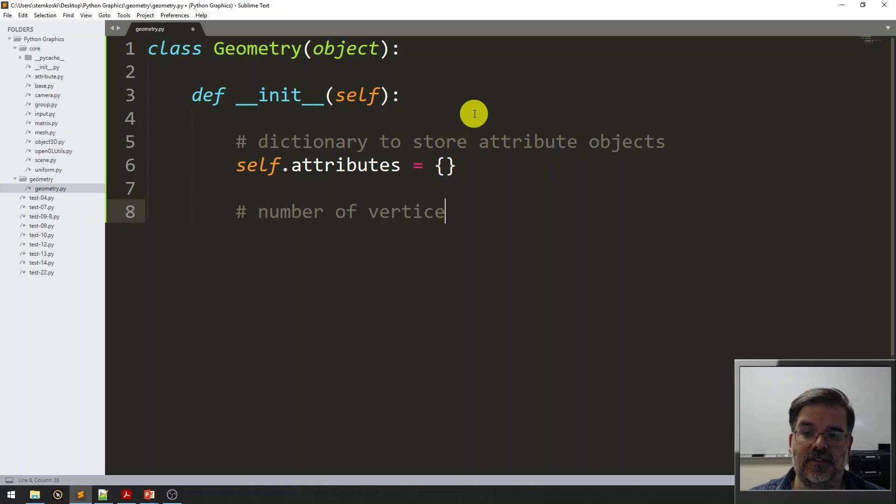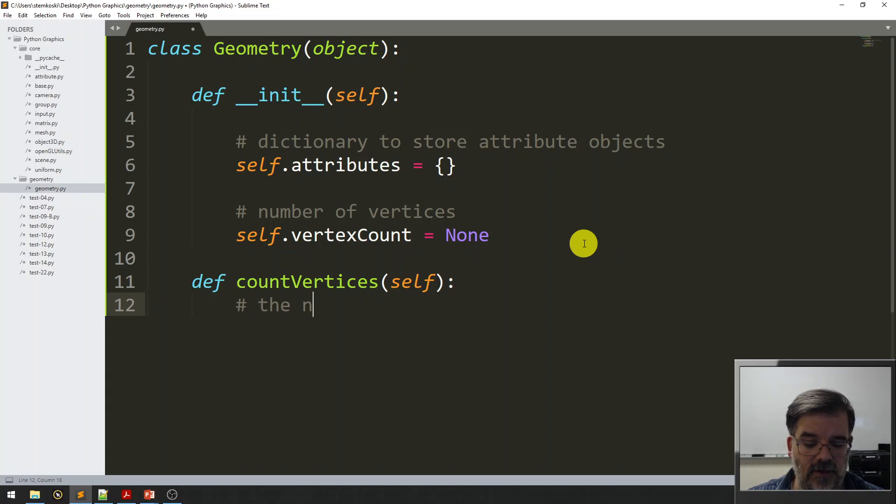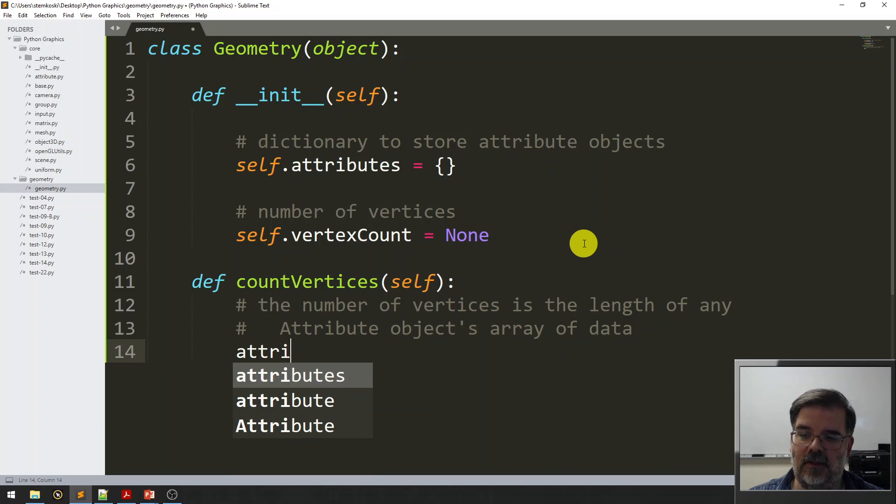And we also need to store the number of vertices being rendered. That's used by the glDrawArrays function. And I'll call that vertexCount. Initially, I'll set it equal to none because we don't know how many vertices there will be. But there's an easy way to calculate this. We'll create a function called countVertices. And in this function, we observe that the number of vertices is the length of any attribute object's array of data.